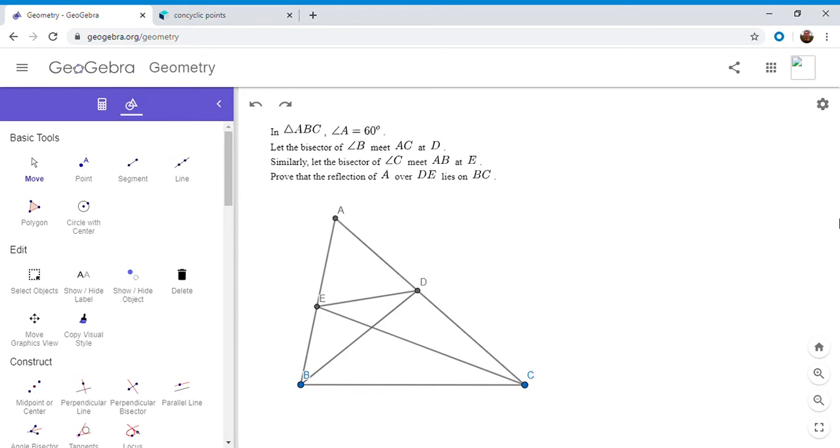We want to show that the reflection of A over DE lies on BC. I didn't actually draw the reflection of A over DE because if I did, since the software is basically perfect at drawing, you would actually see that reflection lie right on BC. You might think that it was already constructed to lie on BC when in fact that's what we're trying to prove.